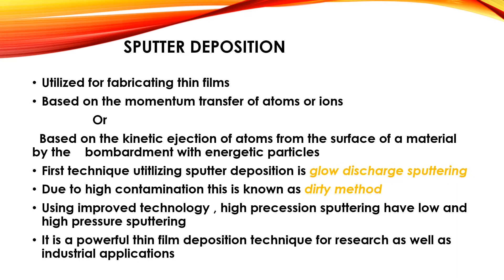Sputter deposition is utilized for fabricating thin films. It is based on the momentum transfer of atoms or ions, or the kinetic ejection of atoms from the surface of a material by bombardment with energetic particles. The first technique utilizing sputter deposition is glow discharge sputtering. Due to high contamination, this method is also known as the dirty method. Using improved technology, high pressure and precision sputtering have been developed. It is a powerful thin film deposition technique for research as well as industrial applications.